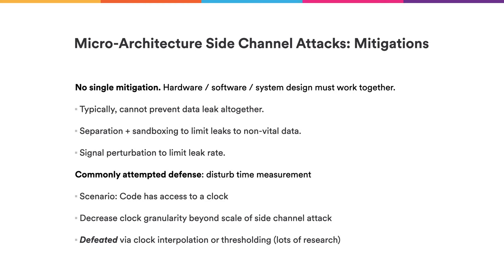One very intuitive approach is to interfere with the timing measurement. Since the timing measurement needs to be on the order of maybe 100 microseconds, it would seem intuitive that denying access to a high-precision clock and using only a clock that measures in the microsecond or millisecond range would make such measurements impossible. However, as it turns out, this is not entirely true. Various research has shown that this can be defeated by recovering a high-precision clock from a low-precision clock, or by living on the clock edge and doing thresholding measurements. So interference with the timing measurement has limited effectiveness in mitigating side-channel attacks.